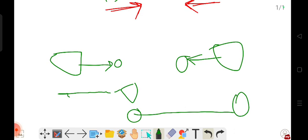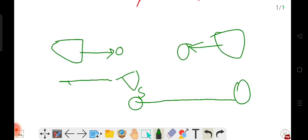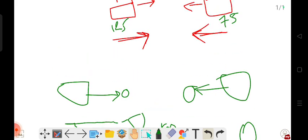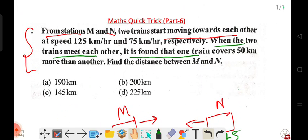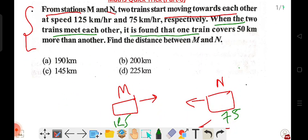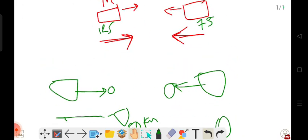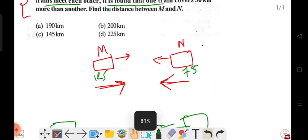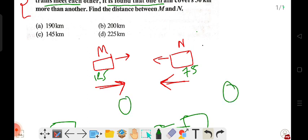So the distance difference is 50 kilometers. We need to find the total distance between M and N, the starting points of both trains.